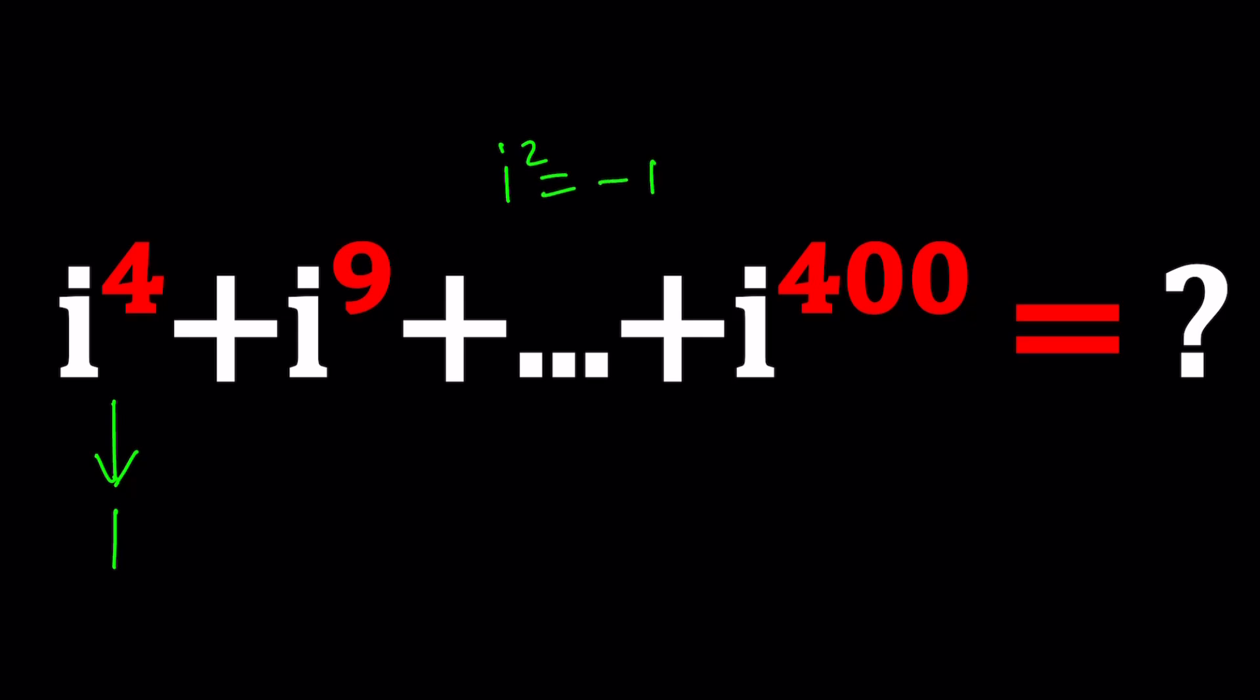i to the ninth. And now from, since we know that i to the fourth is 1, we can kind of write i to the ninth as i to the fourth squared. And that makes i to the eighth and multiply by a single i. And you'll get the answer.